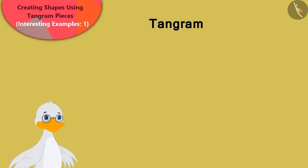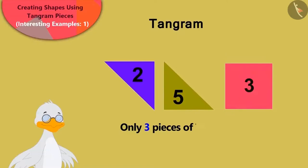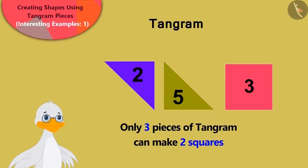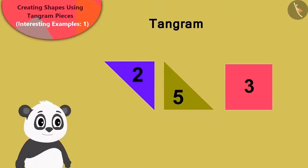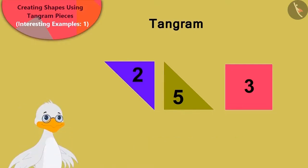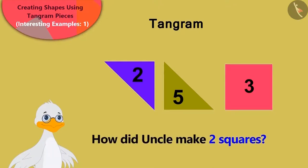Duck uncle said that he can only use 3 pieces of Tangram to make 2 squares. Golu said that he can only see 1 square. Children, can you say how uncle made 2 squares?